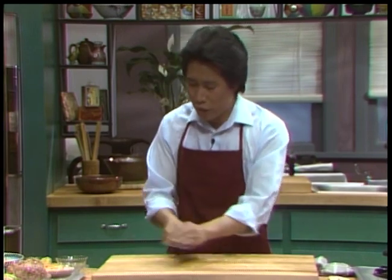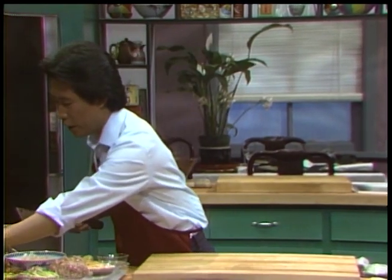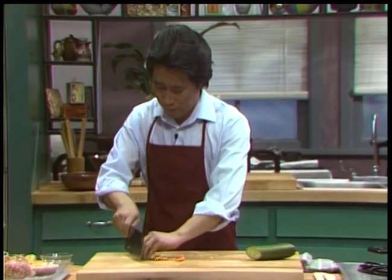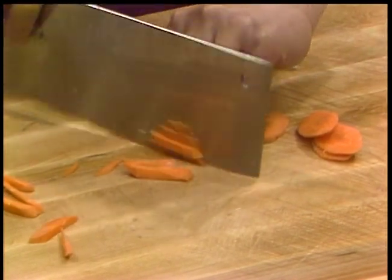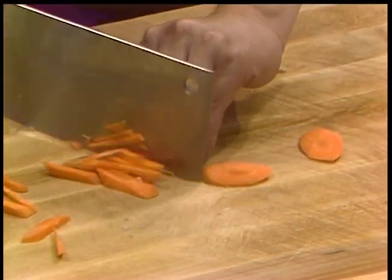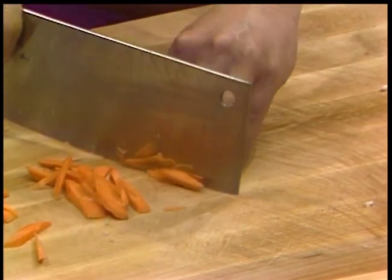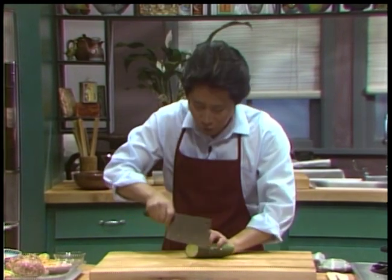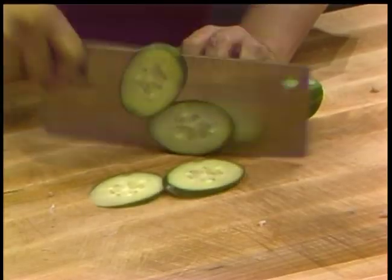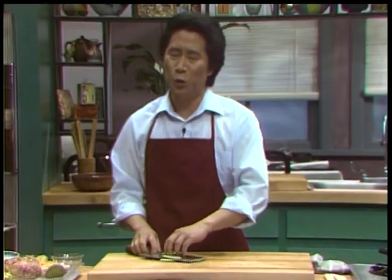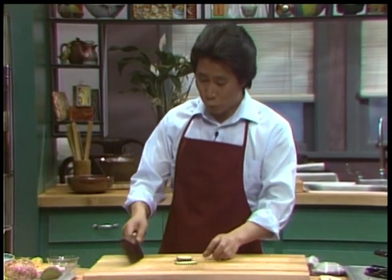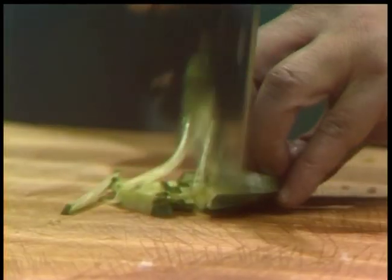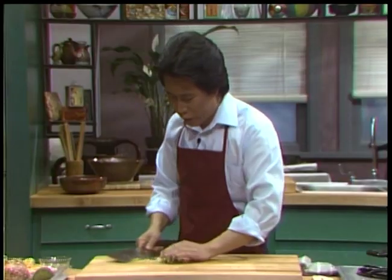Next, we're gonna cut up some of the carrot and cucumber. Everything is julienne. This is julienne. Let's see how simple, how easy it is. And also do some cucumber — one, two, three. Of course, all of these you can do way ahead of time. You don't have to drive yourself crazy at the last minute. All of this is so easy to do.